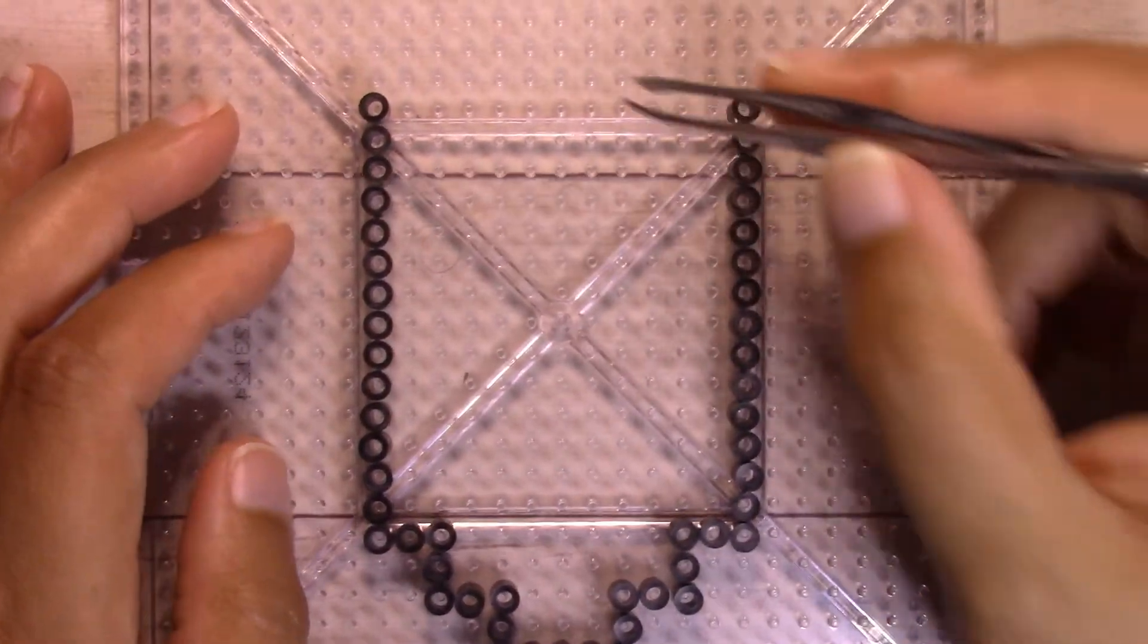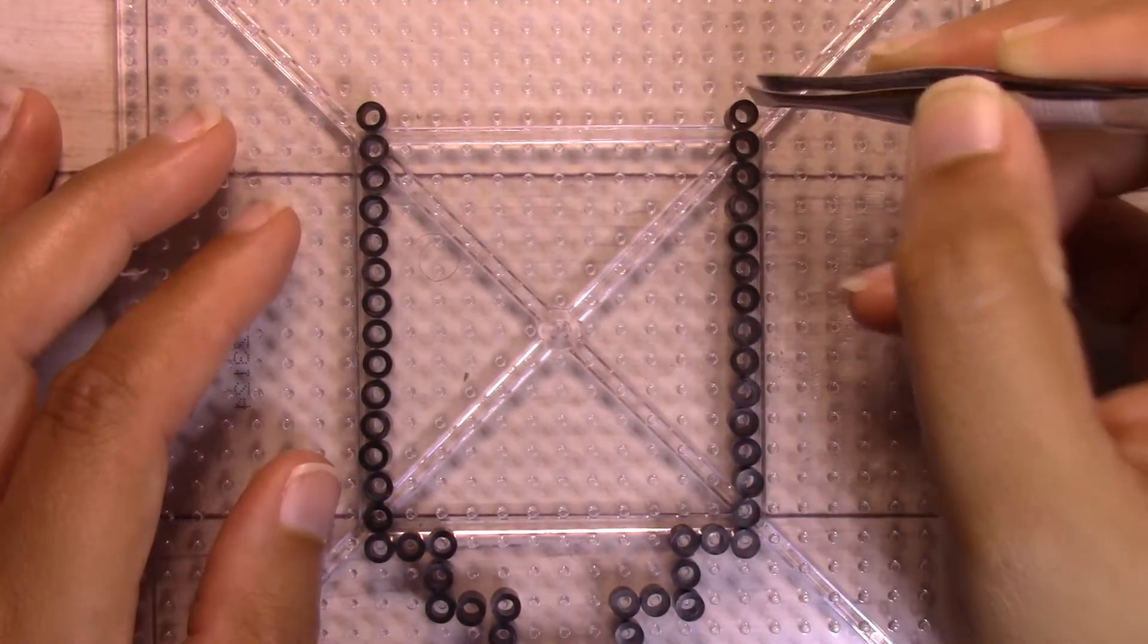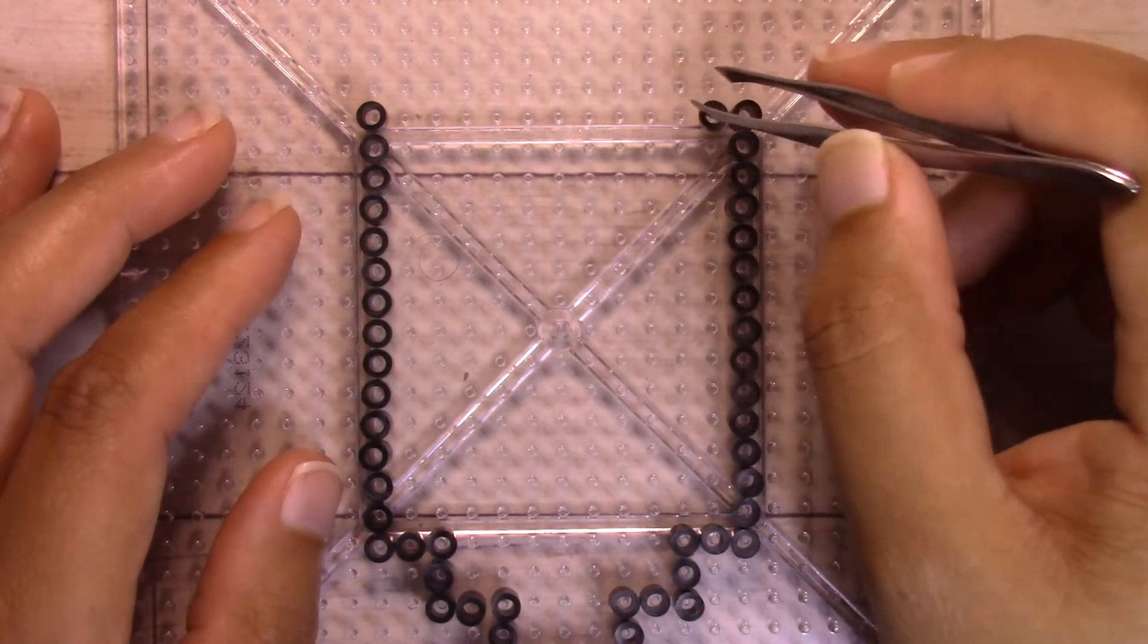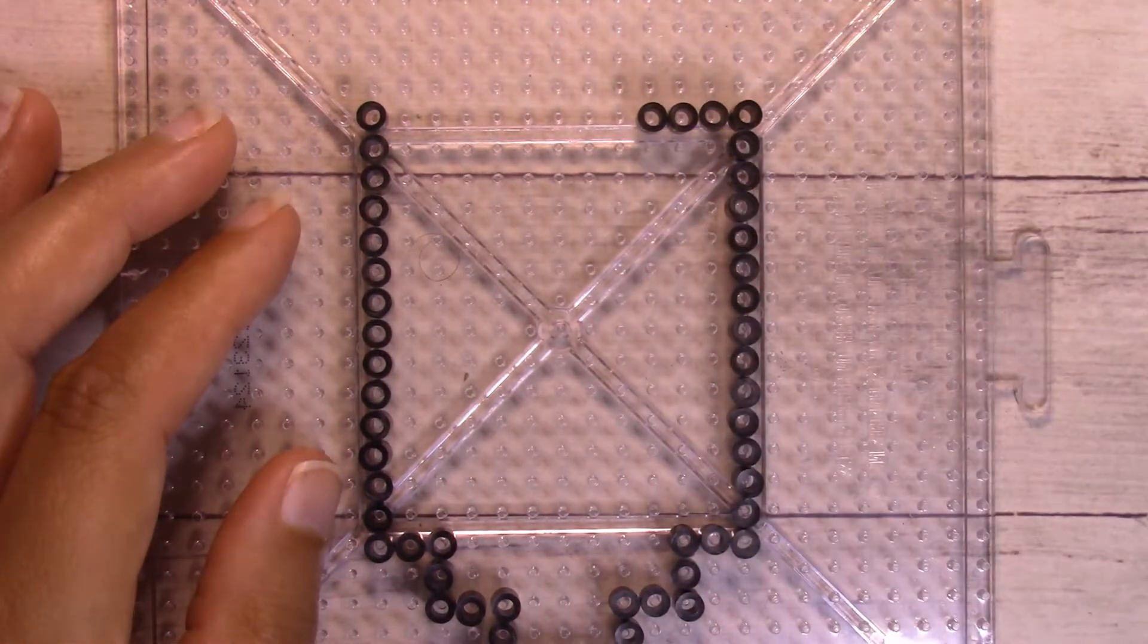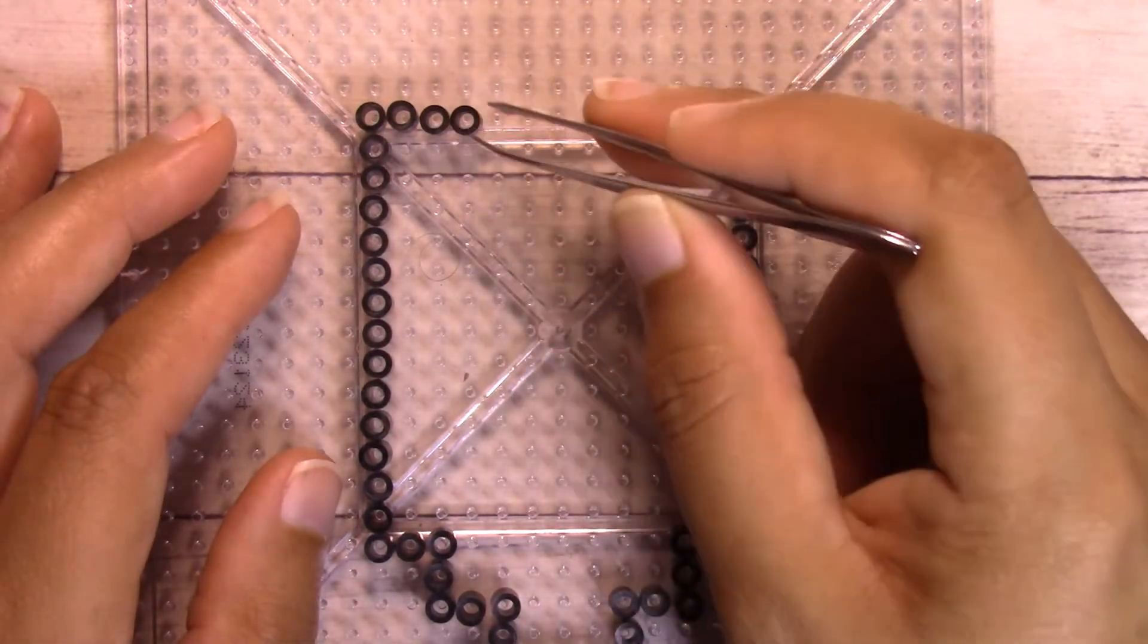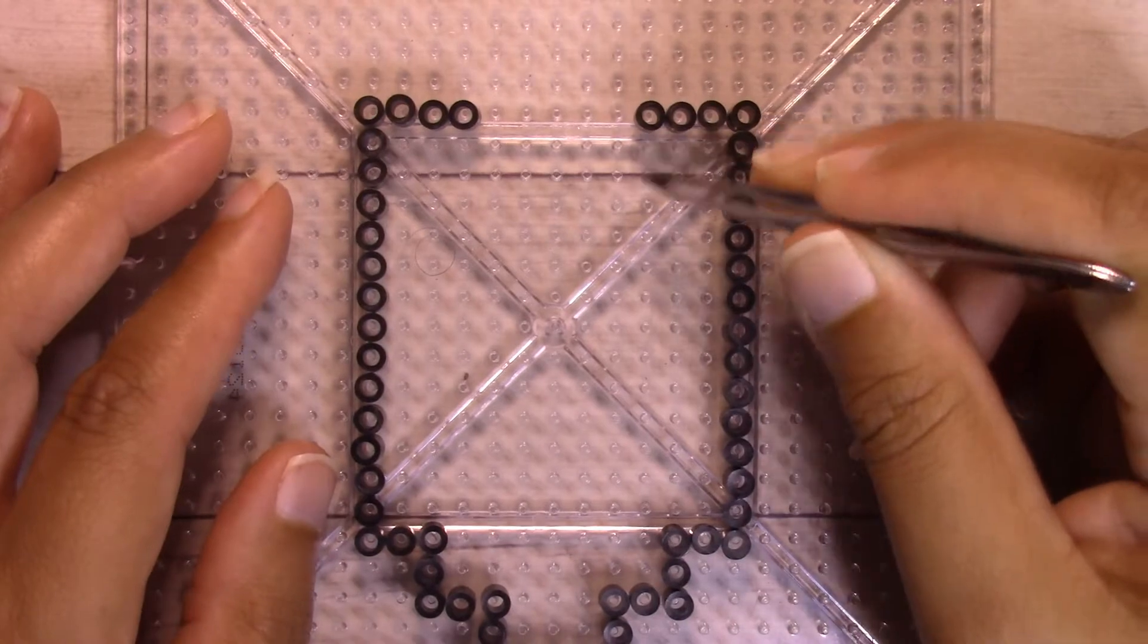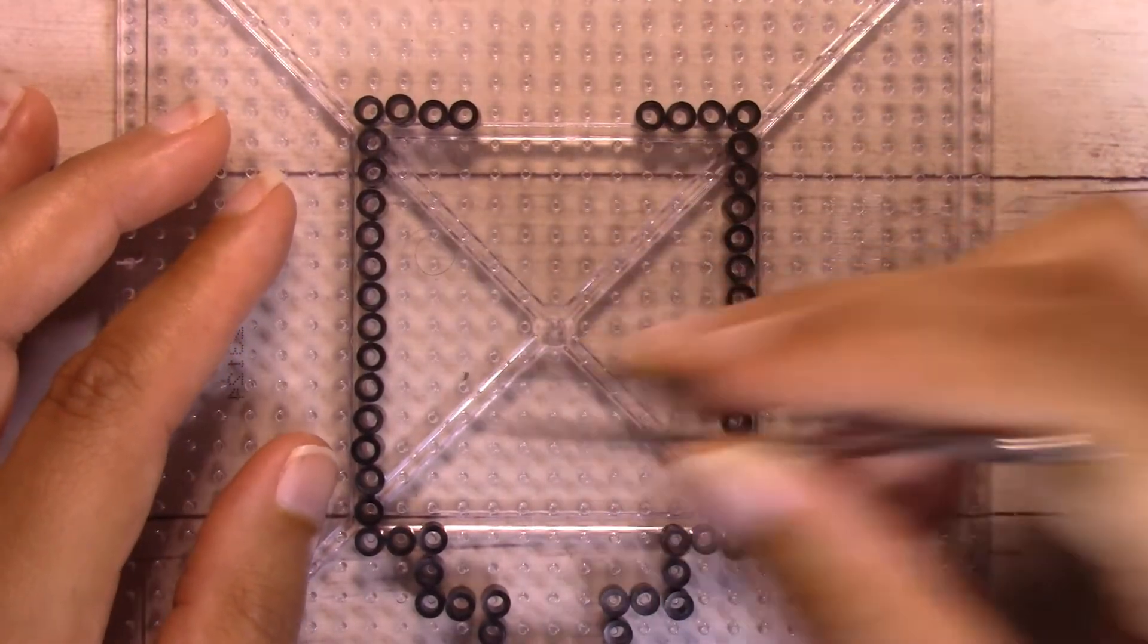And now I'm going to work inward from both sides so there are four beads each. And now I'm going to work down on both sides of the inner part here so there are 15 beads each.